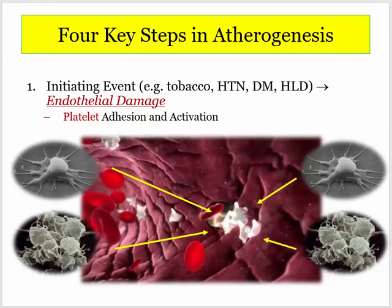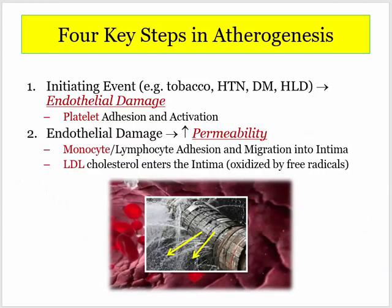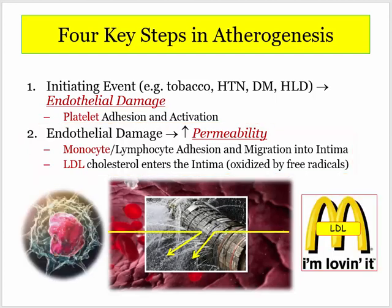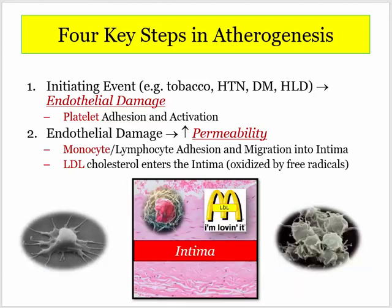The bigger issue complicating endothelial injury is an increase in permeability to circulating cells and molecules — that is step two. Following endothelial damage, there is an increase in permeability of the endothelial surface. When the vessels are permeable, monocytes and LDL cholesterol particles show up. You really don't want these players in the intima. Tissue monocytes differentiate into macrophages alongside oxidized LDL particles and activated platelets.